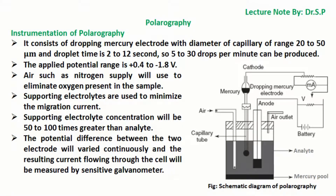Instrumentation of polarography consists of a dropping mercury electrode with a capillary diameter in the range of 20 to 50 micrometers, and droplet time is 2 to 12 seconds, so 5 to 30 drops per minute can be produced. The applied potential range is +0.4 to −1.8 volts. An inert gas such as nitrogen is used to eliminate oxygen present in the sample. Supporting electrolytes are used to minimize the migration current, and the supporting electrolyte concentration is 50 to 100 times greater than the analyte.